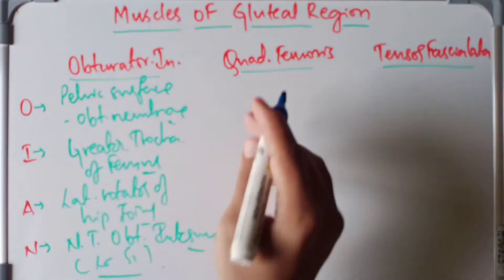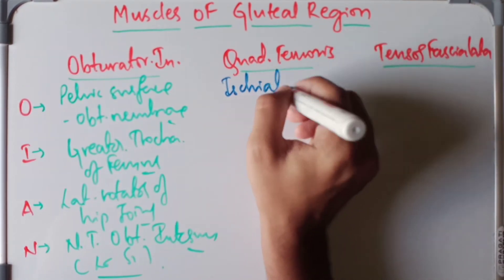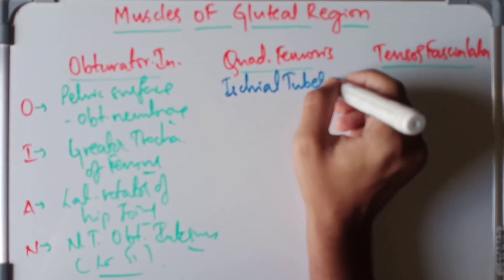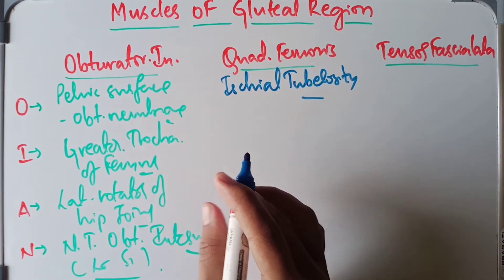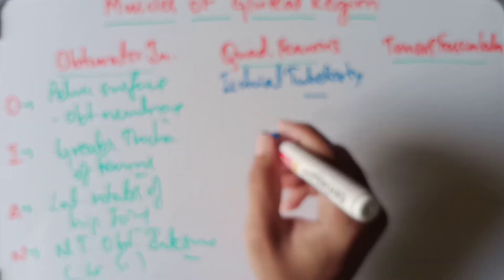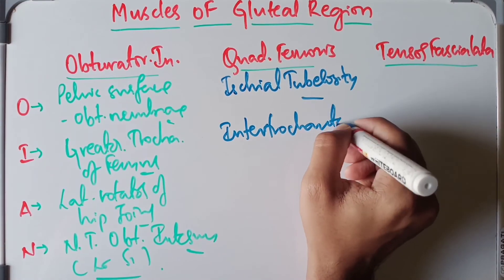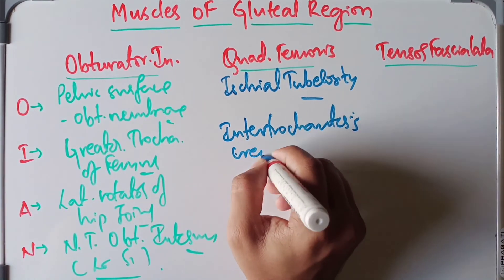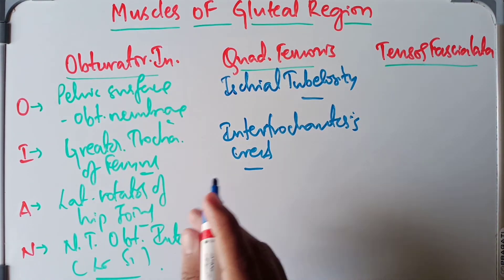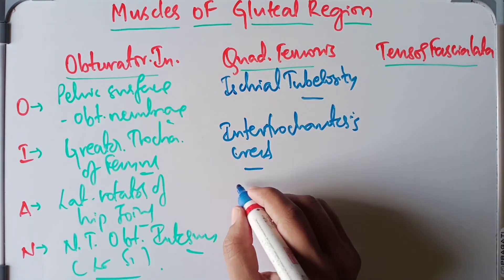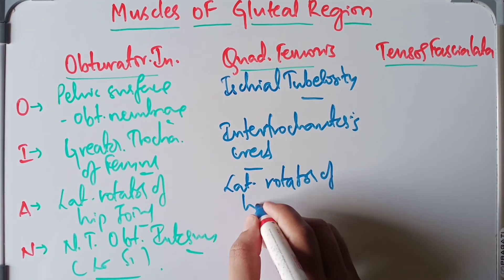Moving on to the quadratus femoris. Its origin takes place from the lateral border of the ischial tuberosity. It is inserted into the quadrate tubercle of the intertrochanteric crest, which lies between the two trochanters of the femur. The action of the quadratus femoris is lateral rotation of the hip joint.